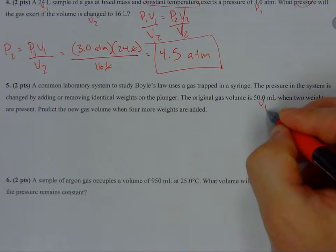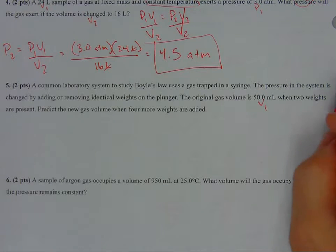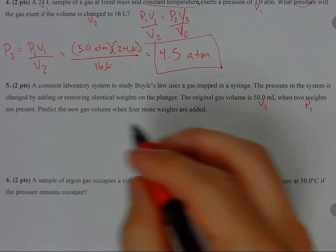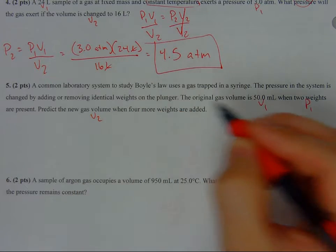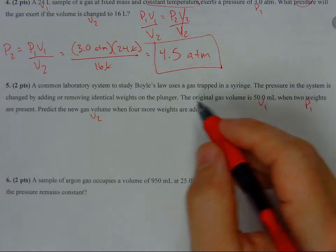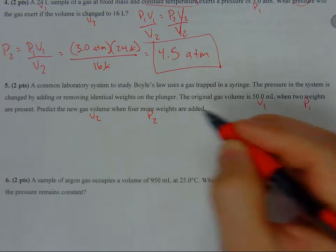For example, V1 is the case under pressure conditions with two weights - that's our P1. Predict the new gas volume, that's V2, when four more weights are added - that's P2.